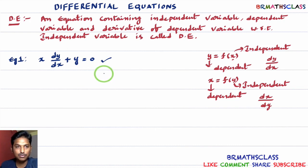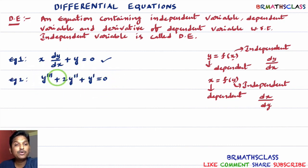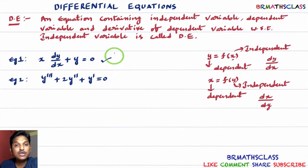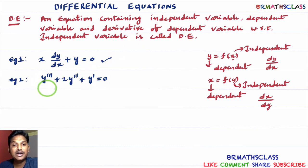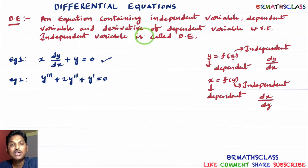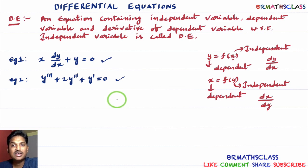We will understand this with one more example. Consider y triple dash, that means third order derivative d cube y divided by dx cube, plus 2 times y double dash plus y dash equal to 0. Here, derivative of dependent variable with respect to independent variable includes not only dy by dx, but also d square y by dx square and d cube y by dx cube. An equation containing such a derivative is a differential equation.